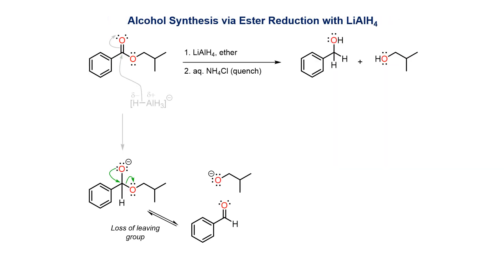Because this reaction is occurring at high pH, it is possible for an alkoxide to break off as a leaving group and for the carbonyl to reform. This gives the intermediate aldehyde, which is not isolated, and which goes on to react further.